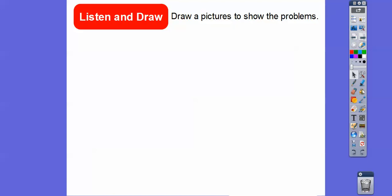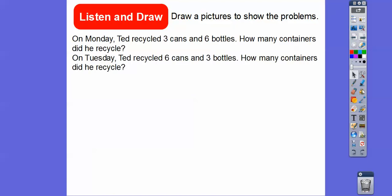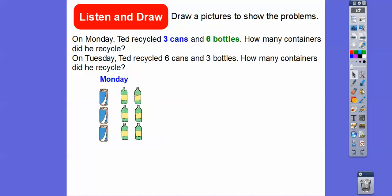So draw a picture to show the problem. Here's the first one. On Monday, Ted recycled 3 cans and 6 bottles. How many containers did he recycle? On Tuesday, Ted recycled 6 cans and 3 bottles. How many containers did he recycle? So here's Monday.